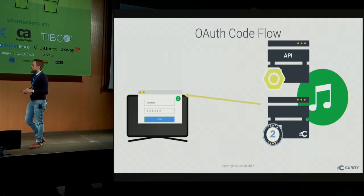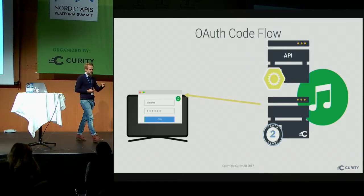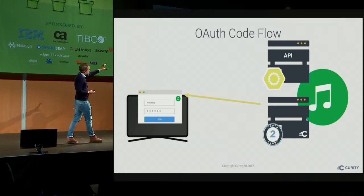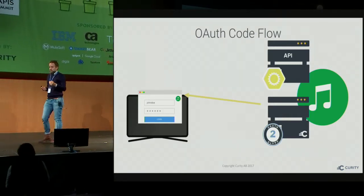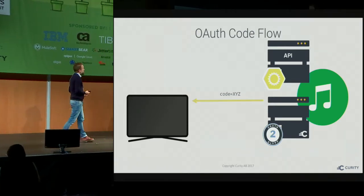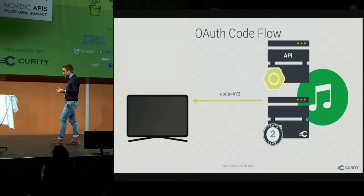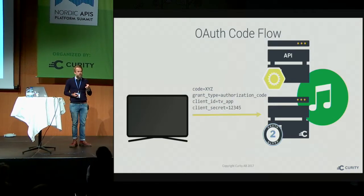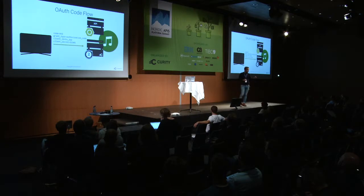The OAuth server authenticates the user. There's a subtle difference from before: we didn't start by collecting the username and password from the user — we started by going to the authorization server. It shows a login page that belongs to the authorization server itself, so the user enters credentials directly to the authorization server. The authorization server then says 'looks good so far' and gives you a one-time code — a nonce — that you can use to continue the code flow.